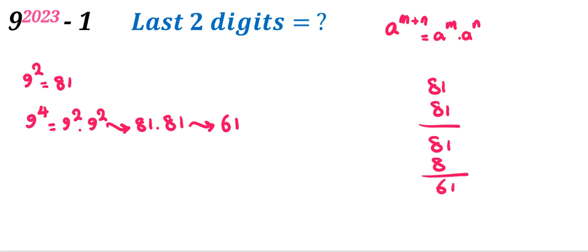Now in the next step, we want to calculate 9 to the 8. It will be 9 to the 4 times 9 to the 4 equal to 61 times 61.